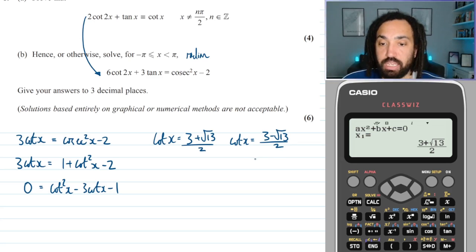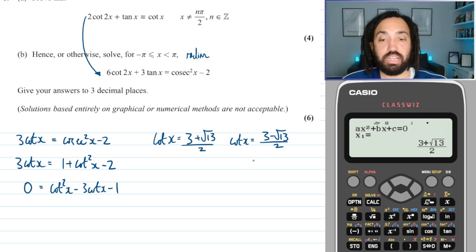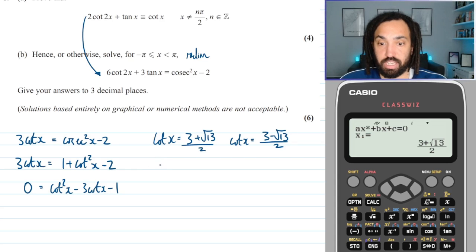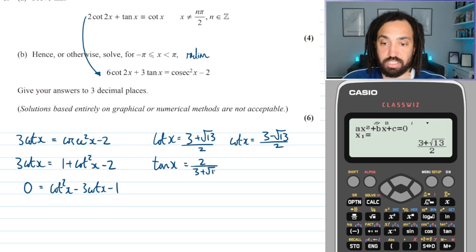And we don't need to worry like we do for cos and sin whether or not these values are in the range of cot x, because cot x can take all real values just like tan can. Okay so next we can say that tan x is the reciprocal of cot x so we can flip it over like this, because that's going to be helpful so that we can find x using tan to the minus 1 on our calculator because there's no cot to the minus 1.